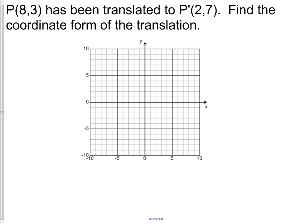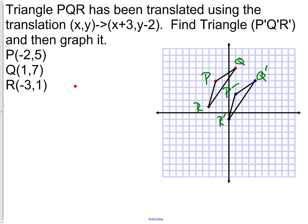Here's a different type of question. Point P which is at (8,3) has been translated to P prime which is at (2,7). Find the coordinate form of the translation. What this question is asking you to find is the coordinate form of the translation.